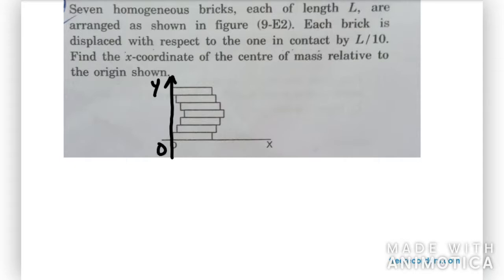Let us mark all the center of masses for each brick. So these are all the center of masses for each brick. Now as it says that each brick has a length L, if I mark this part from O to the center of mass, that means this distance is L/2.